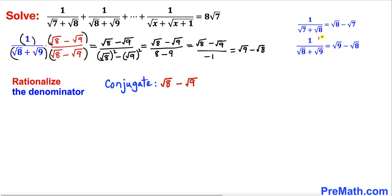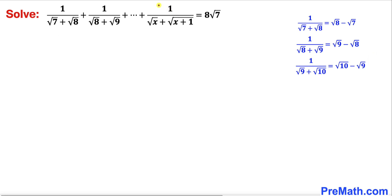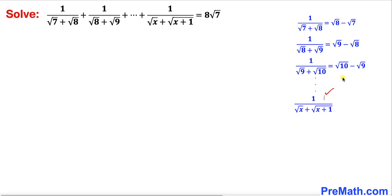So therefore 1 divided by square root of 8 plus square root of 9 can be written as square root of 9 minus square root of 8. Finally, for the very last term — 1 divided by square root of x plus square root of x plus 1 — extending the whole pattern, this can be written as square root of x plus 1 minus square root of x.